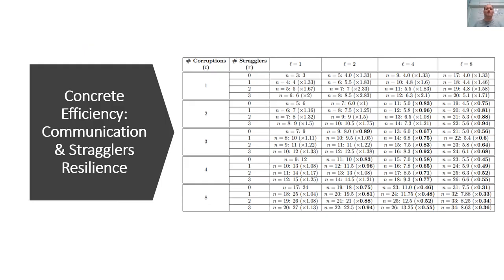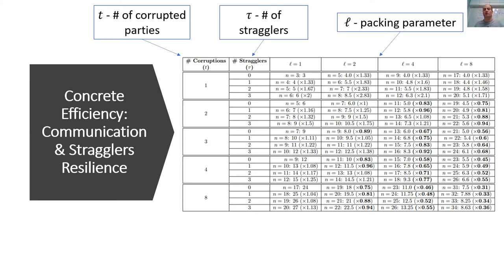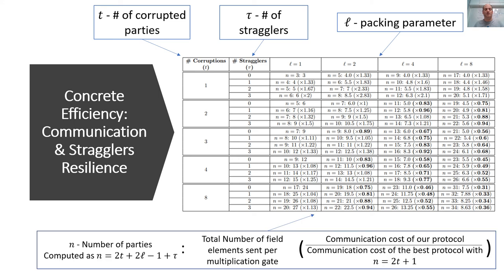Finally, we examined the communication cost of our protocol for various parameters. In this table, for different numbers of corrupted parties, different numbers of stragglers, and different packing parameters, we present the number of parties N computed as 2t plus 2L minus 1 plus tau, the total number of field elements sent per multiplication gate in our protocol, and the ratio between the communication cost of our protocol and the best previous protocol that leaves no room for stragglers and does not use packed secret sharing. As can be seen, when we increase the packing parameter and the number of corruptions, we beat the previous best protocol while still leaving room for stragglers.